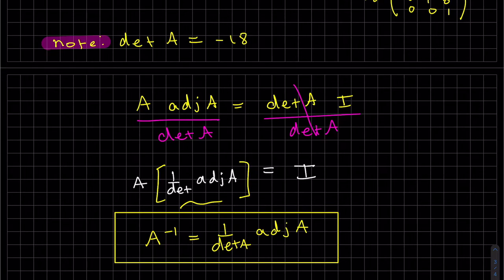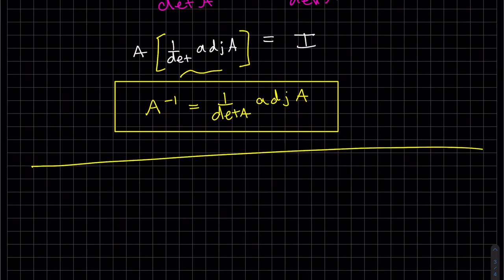Again, like if you're trying to program a computer and you need the determinant of A, this is probably how you do it. Okay, last topic.